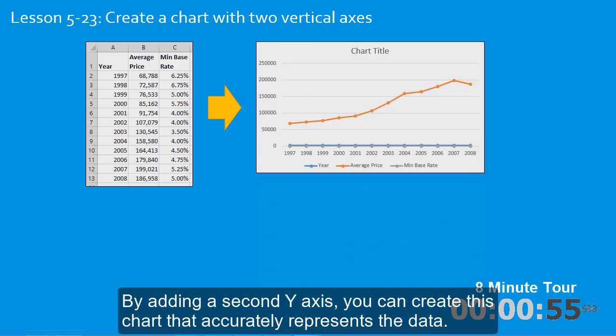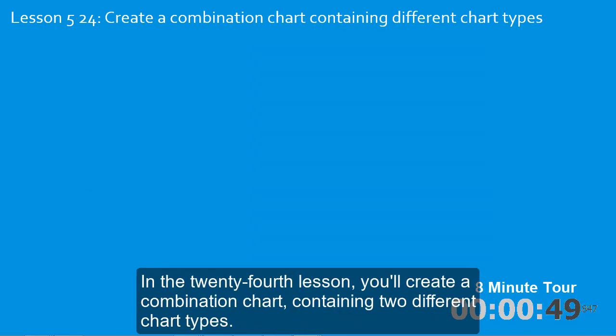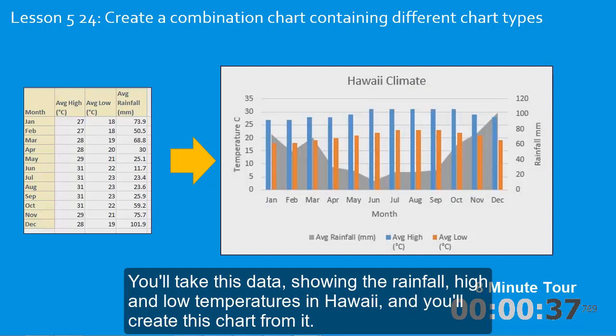In the twenty-fourth lesson you'll create a combination chart containing two different chart types. You'll take this data showing the rainfall, high and low temperatures in Hawaii, and you'll create this chart from it.